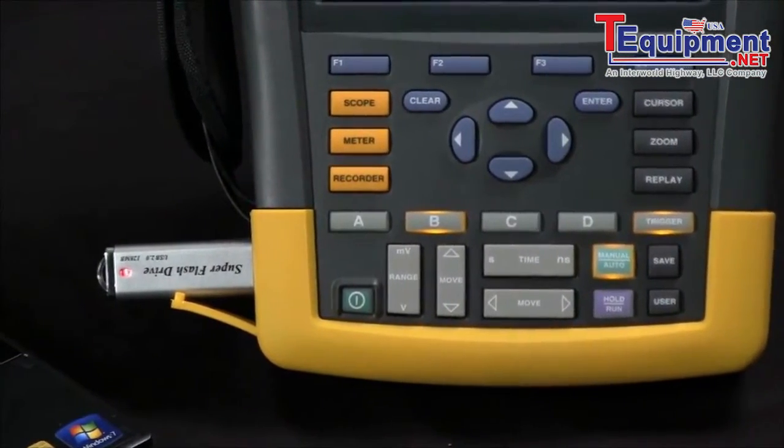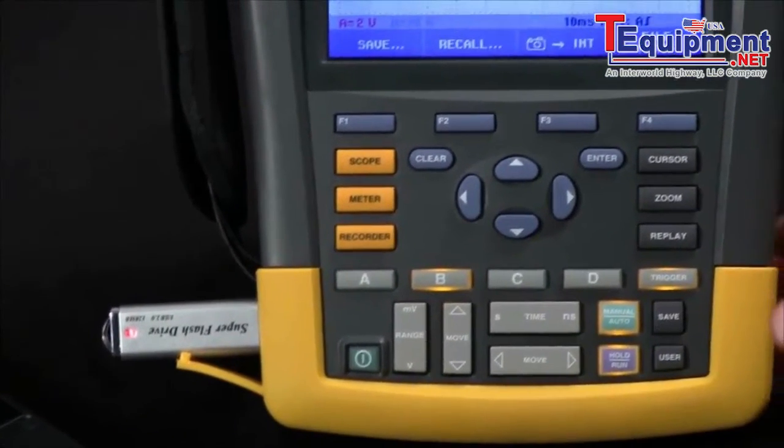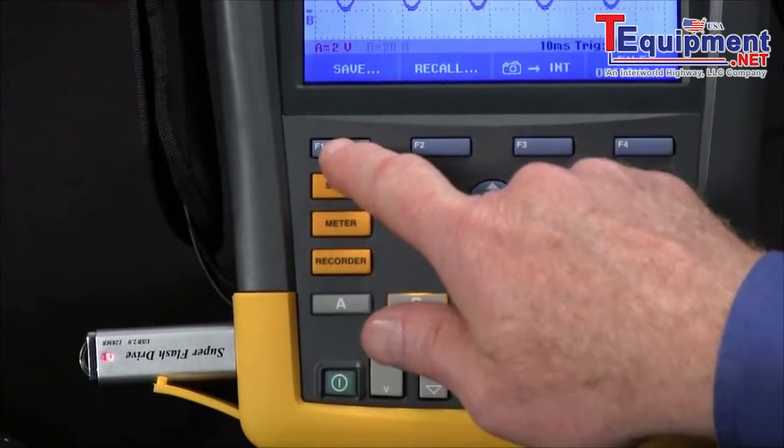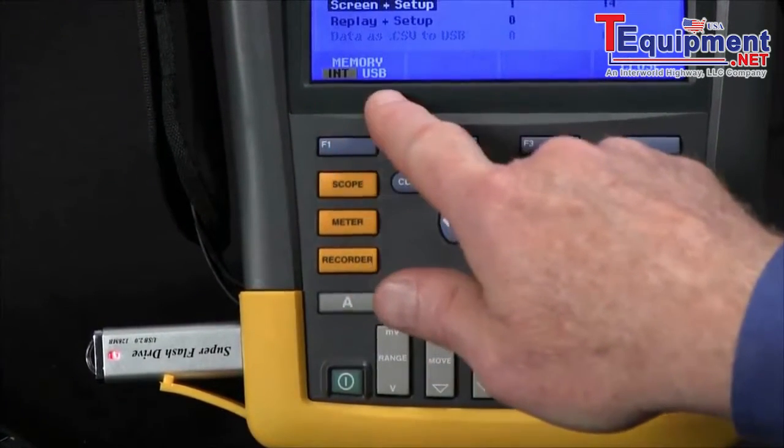Once the memory stick is installed, we simply hit the Save button, hit F1 for Save, and select F1 to change from internal memory to USB.